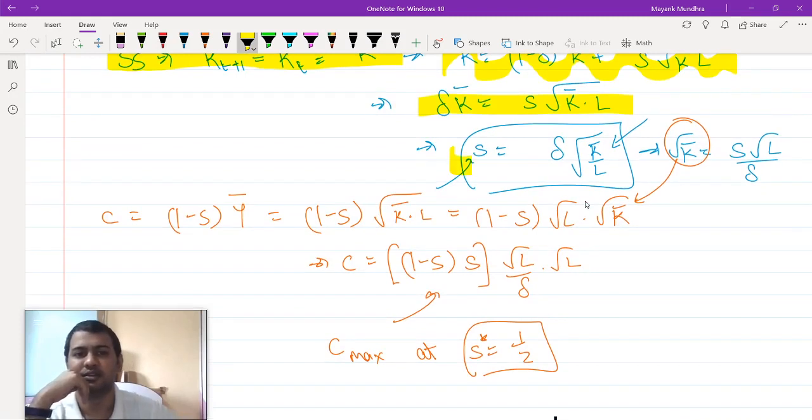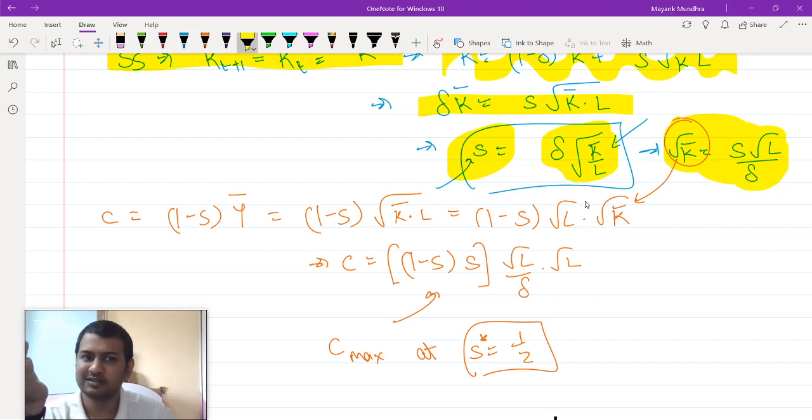Finally, you will get your savings rate is equals to delta K bar into L which means that under root of K bar is equals to s under root L by delta. This is your capital steady state level of capital as a function of s, delta, and amount of labor L.